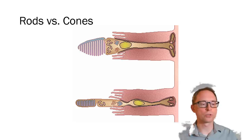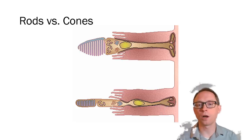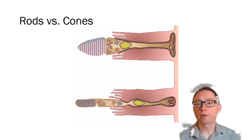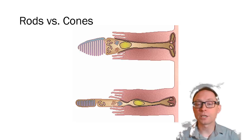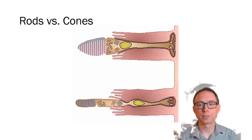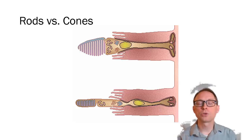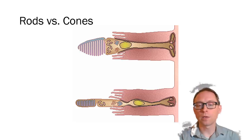Now let's talk about rods versus cones. Light goes into your eye and your lens focuses on the fovea, which is a part of your retina — the back of your eyeball. The retina is where you have cells that can sense light: rods and cones. Cones are most able to distinguish colors, whereas rods are in charge of dark and light. In your fovea, you have the highest concentration of cones. Cones are more involved with perceiving color.